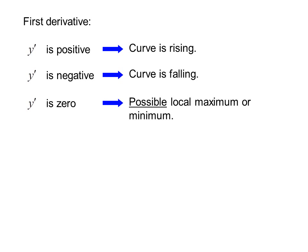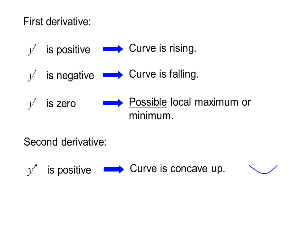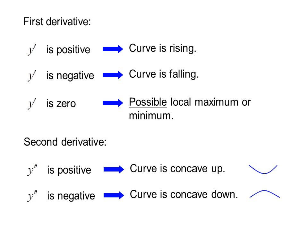If y prime is 0, there's a possible local maximum or minimum. Remember that y prime is the slope. For the second derivative: if y double prime is positive, the curve is concave up; if y double prime is negative, the curve is concave down. A student once told me he remembered which way it curved because if you're positive you're smiling, and if you're negative you're frowning.